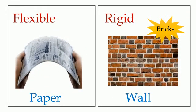Other materials are flexible, like this paper. It is easy to fold and cut. Other materials are rigid, like this wall. It is made of bricks. Bricks are rigid.